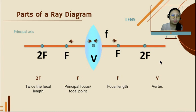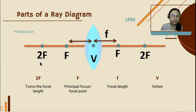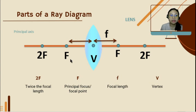We have here the focal point. The focal length is the distance from the vertex to the focal point, or principal focus. The 2F is twice the focal length — from the focal point, one more focal length away is 2F. Then F is the focal point or principal focus. The vertex is at the center of the lens, and this is our principal axis.